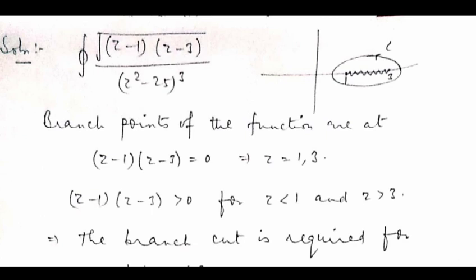If you see the function given in the question, it has root over (z minus 1)(z minus 3) divided by (z squared minus 25) to the power 3. Because of this square root present in the numerator, this is actually a multivalued function, and therefore z equals 1 and z equals 3 are the branch points of the function.